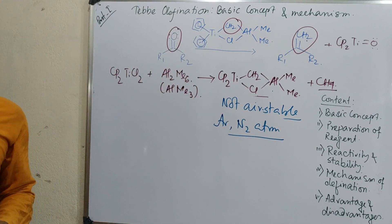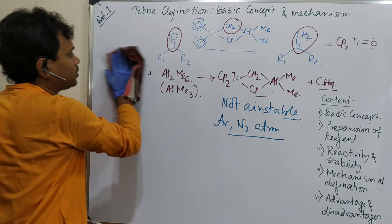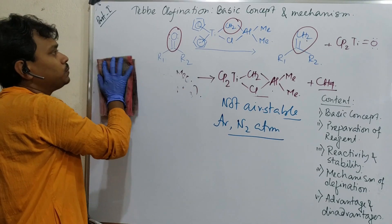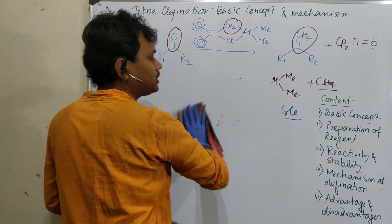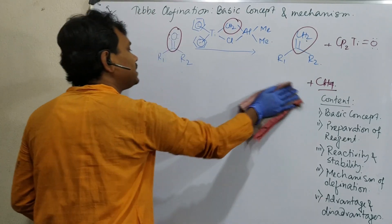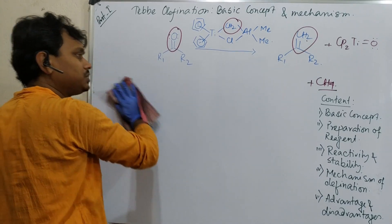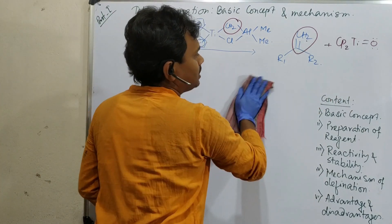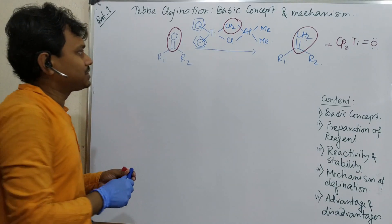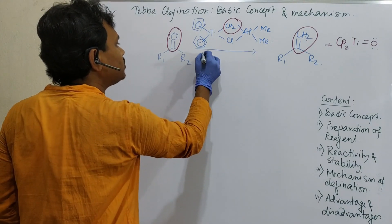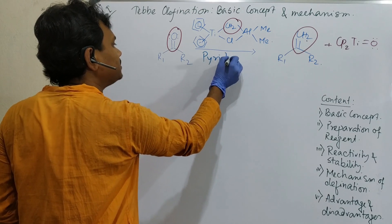Now the next thing, this reagent's activity we have realized. Now find this and how this reaction happens. So the mechanism of the reaction. Actually if you put this Tebbe reagent and carbonate, reaction will not happen. This reagent is stable enough in presence of carbonate that it will not react. But in order to achieve this reaction, another thing is essential, that is Lewis base like pyridine.